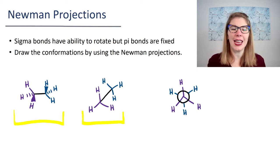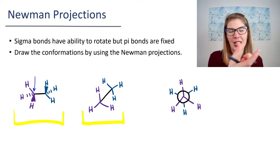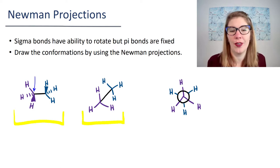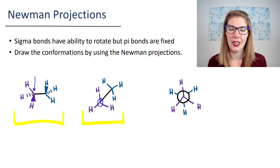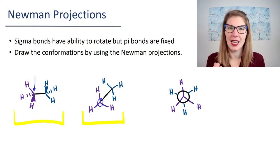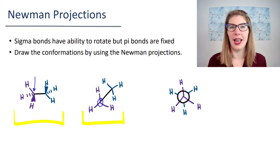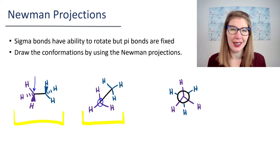You're just taking that front carbon and twisting it towards your face. Once in the sawhorse projection, you take that front carbon and keep twisting it until the front carbon is right in line with your eye. When that happens, the back carbon becomes impossible to see.